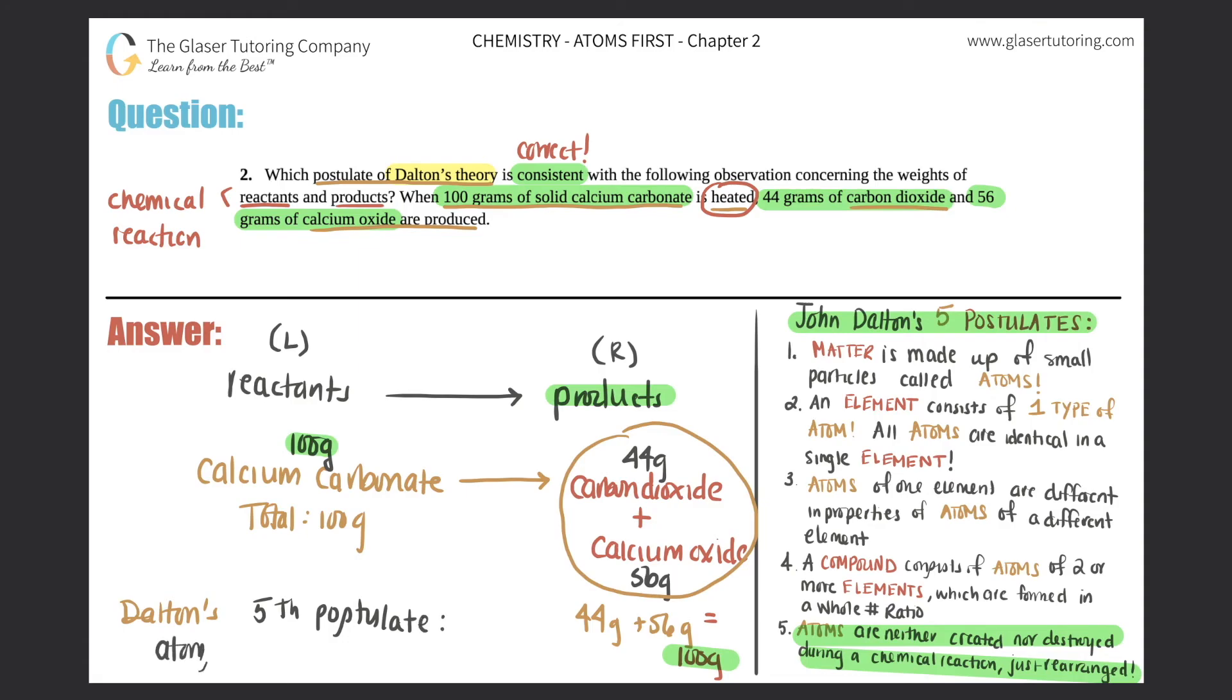And I would just write out what Dalton's fifth postulate is. You could just say that atoms are not created nor destroyed during a chemical reaction. So I'll just say in chemical RXN. RXN is reaction.